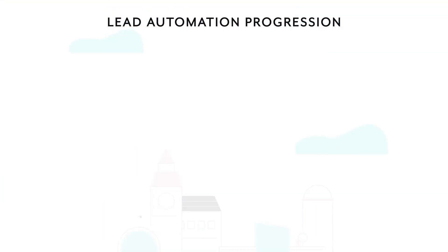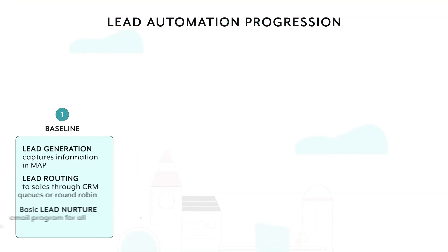Here is an example of what a general lead automation progression looks like and how it can evolve over time. Baseline maturity: In the baseline maturity stage, there is lead generation which captures information, routing leads to sales through a CRM, and a basic lead nurturing process.